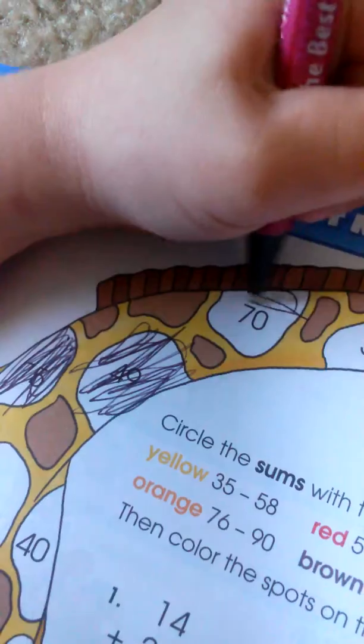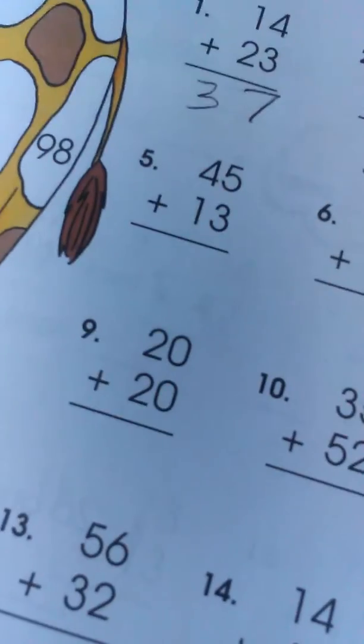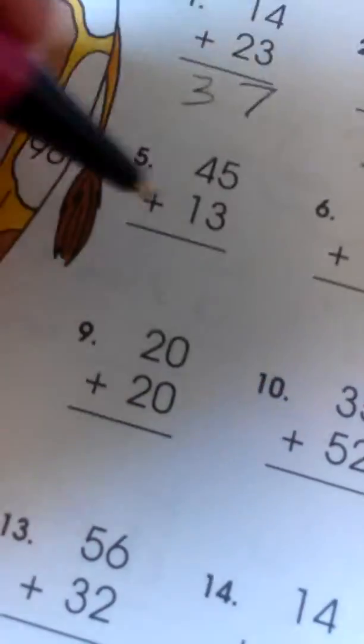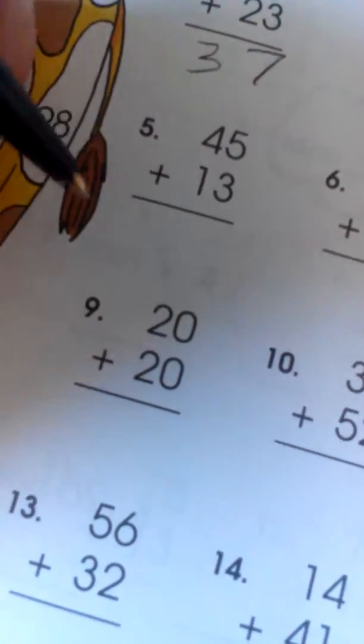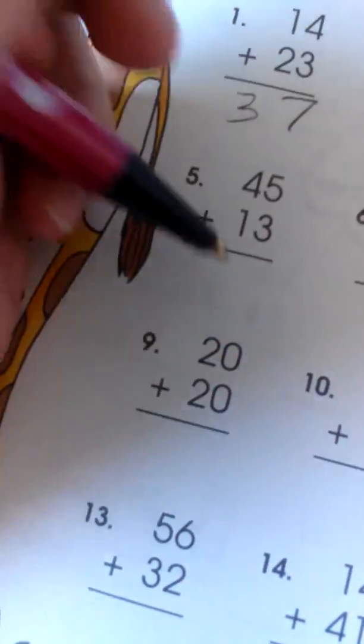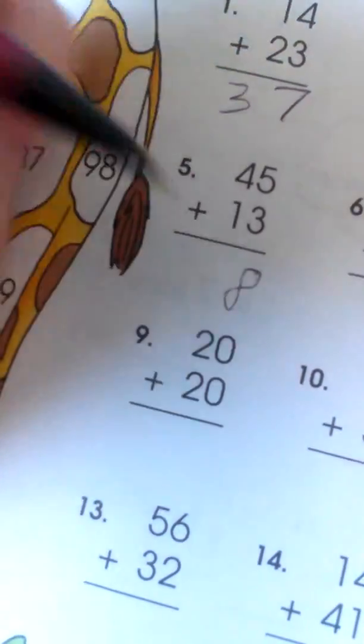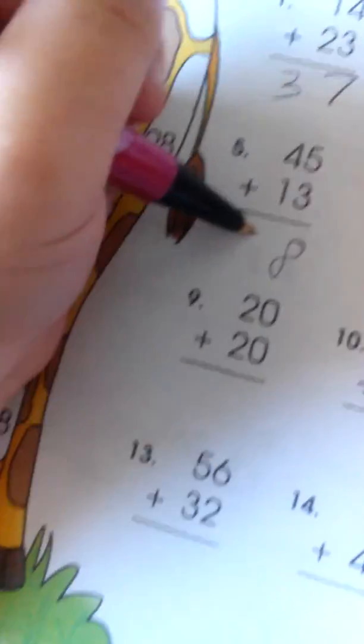There it is. We're really getting close to our end of this math. 45 plus 13. 3 plus 5 is 8 so the 8 goes right here. 4 plus 1 is 5. The answer is 58. 62 plus 14.